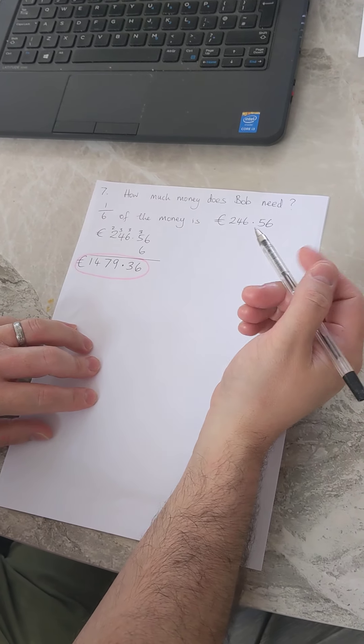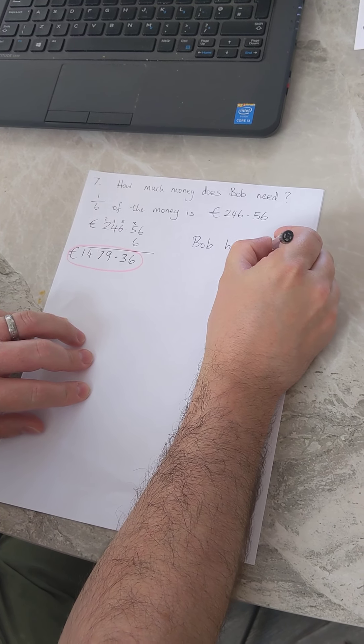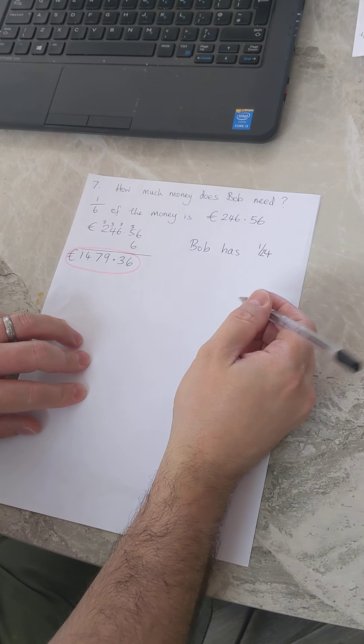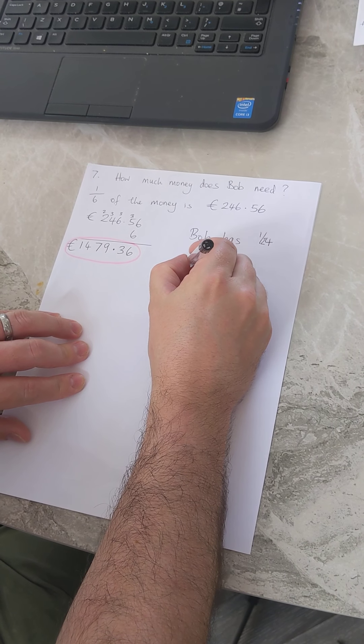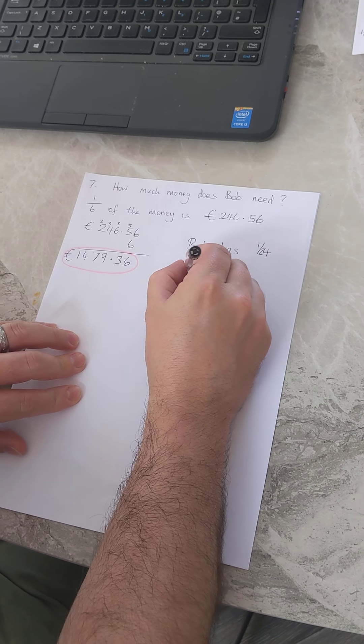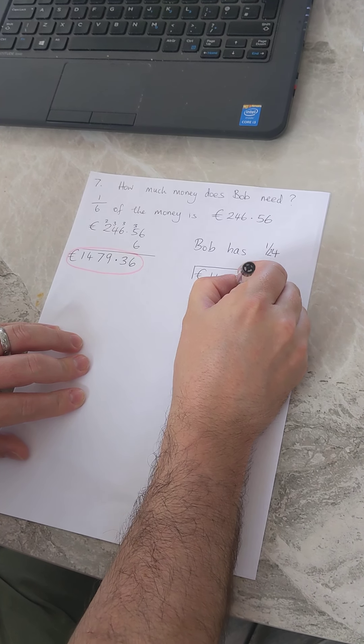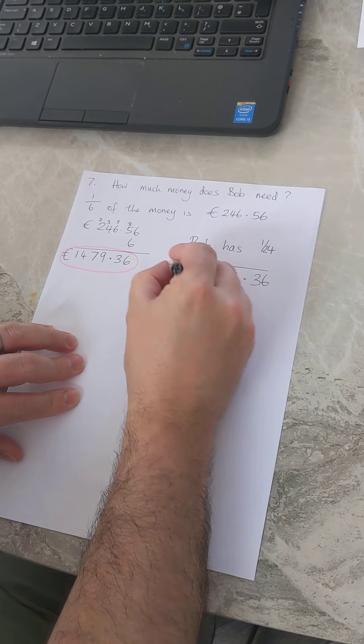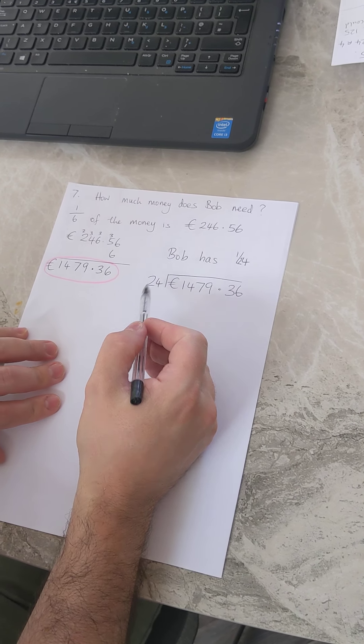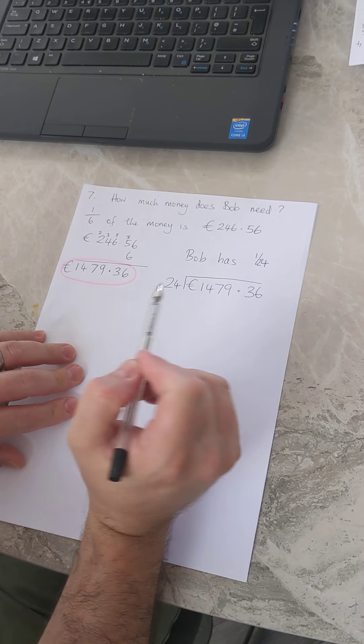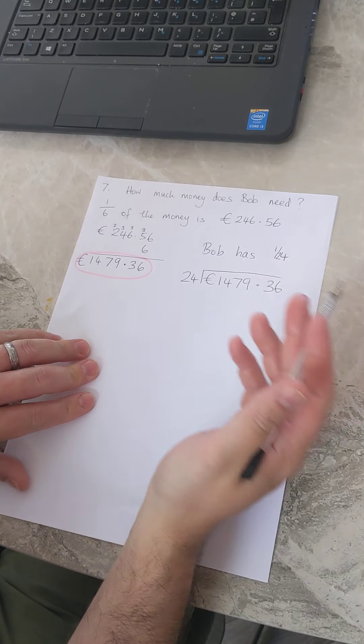But we know that Bob has some money already. Bob has one twenty-fourth of what he needs, so he has one twenty-fourth of this. So if I want to find out how much money he actually has I would take this number here and divide it by 24. That's what I would do, but that's long division and if there's any way for me to avoid doing long division I'm going to avoid doing long division because long division is absolutely horrible and nobody likes it.